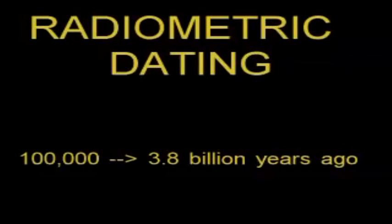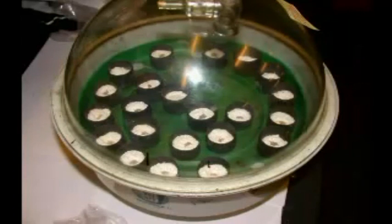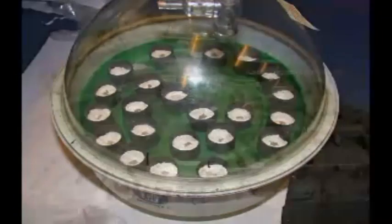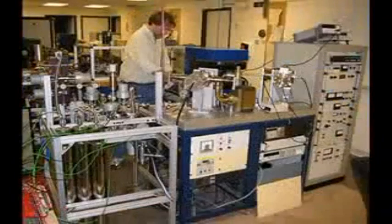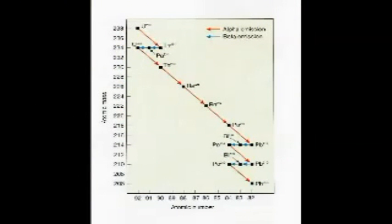Potassium-Argon dating works on the same principle as carbon dating, but instead of carbon decaying to nitrogen, we have potassium decaying to argon. And instead of a half-life of 5,500 years, we have a half-life of 1.3 billion years. That means the method can be used for dating rocks and fossils hundreds of millions of years old. The technique has largely been replaced with the far more accurate Argon-Argon method, and there are other decay processes that can be measured, each with different half-lives, such as uranium-thorium and rubidium-strontium.